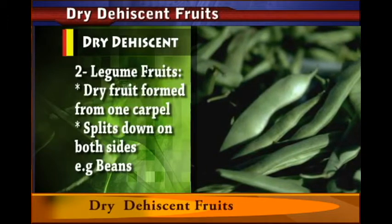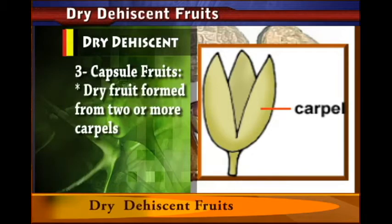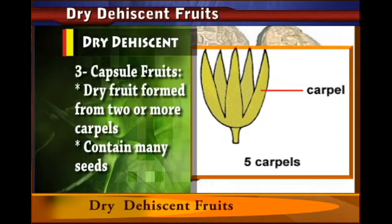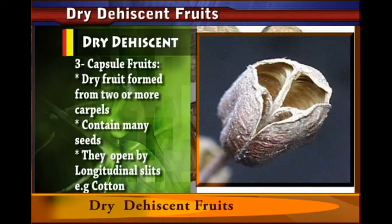Then we have the capsules. Capsules are dry fruits formed from two or more carpels, and they contain many seeds. They open by longitudinal slits. An example is cotton, which is a capsule and a dry dehiscent fruit formed from two or more carpels containing many seeds that open up by a long slit.